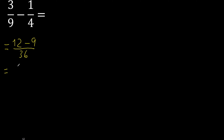3. Can be simplified because it can be divided by the same number. Divided by 3: 3 divided by 3 is 1, and 36 divided by 3 is 12.